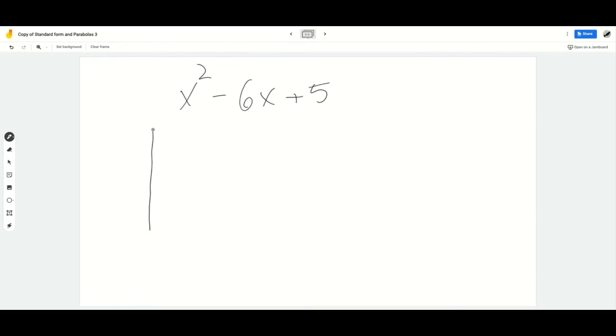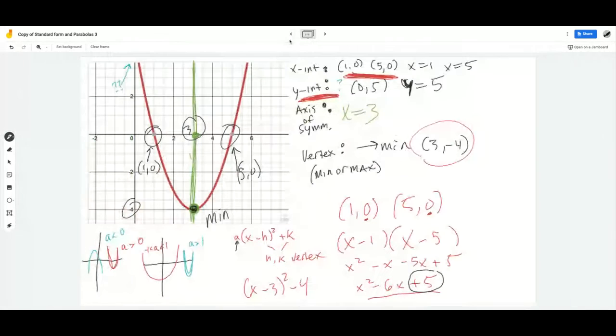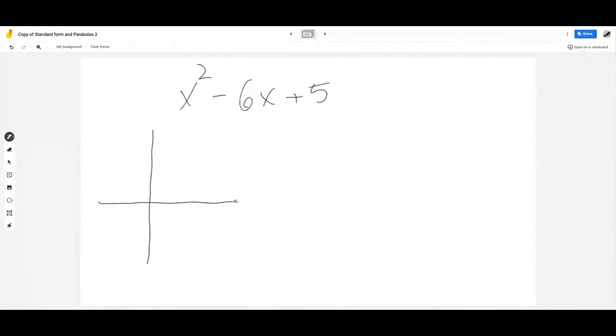We know that on the graph, our zeros are 1 and 5. So I'll graph that here - let's say one is here, two, three, four, and five here, right there like that.